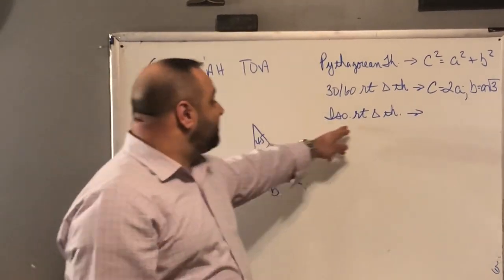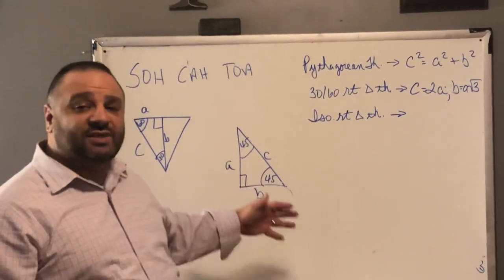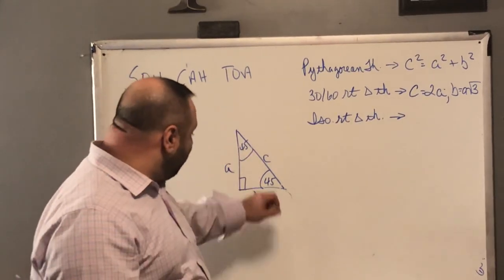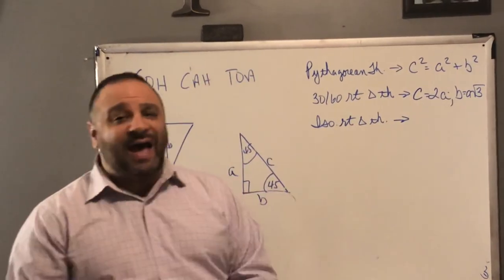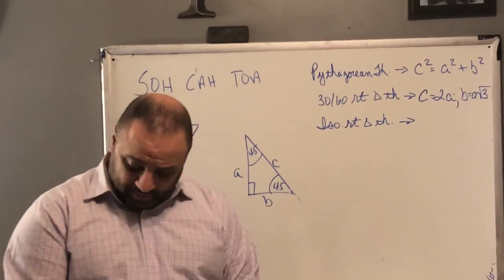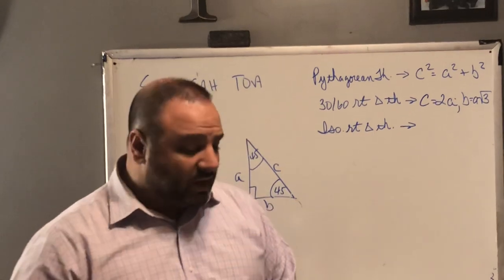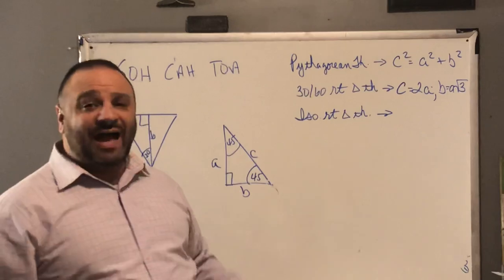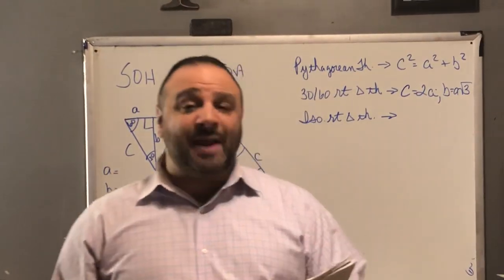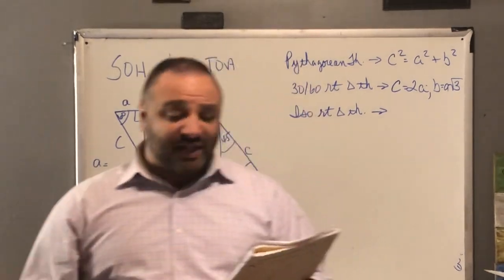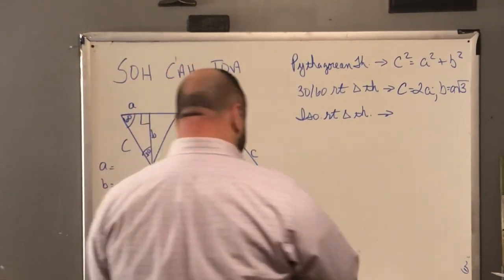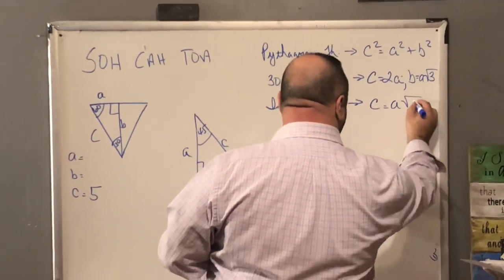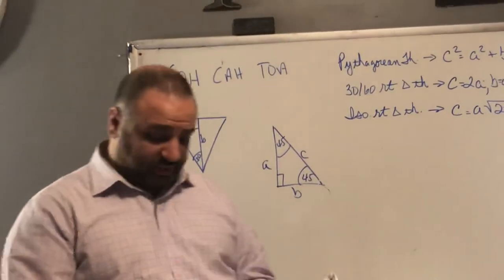Then we looked at the isosceles right triangle theorem. In an isosceles right triangle, we have two congruent sides, and the angles are 45 and 45 degrees. Turn your book to page 25. You'll see Theorem 97: in an isosceles right triangle, the hypotenuse is the square root of 2 times the length of either leg. So simply, C equals A times the square root of 2.